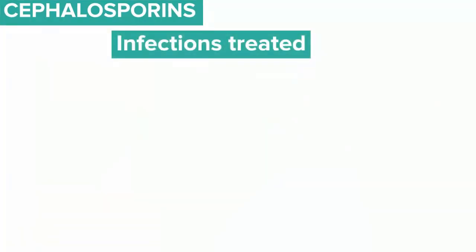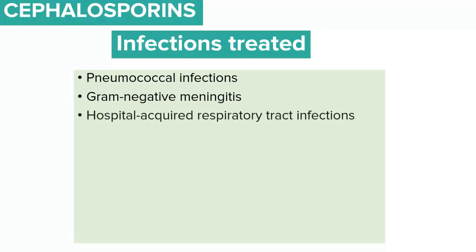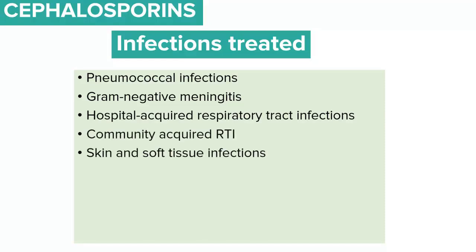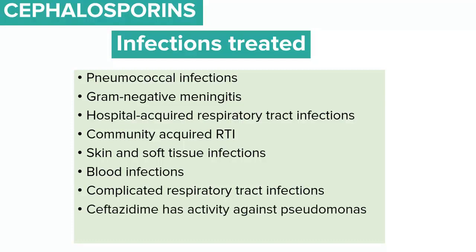The common infections treated with third-generation cephalosporins include pneumococcal infections, gram-negative meningitis (using ceftriaxone), hospital-acquired and community-acquired respiratory tract infections, skin and soft tissue infections, bloodstream infections, and complicated respiratory tract infections. Ceftazidime specifically has activity against Pseudomonas.